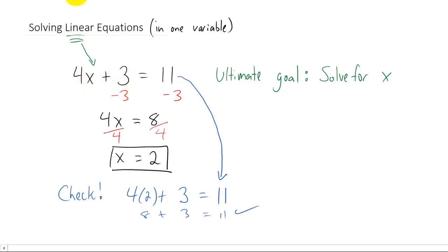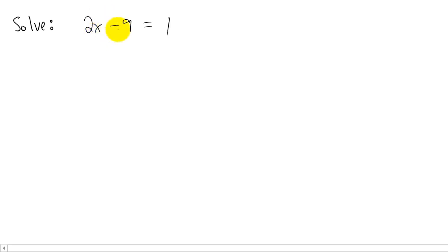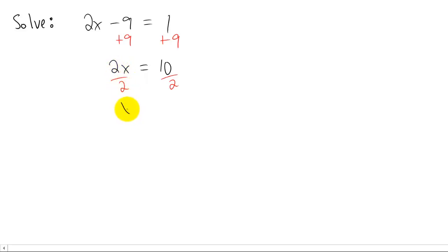Let's solve another one: 2x minus 9 equals 1. We can't do this in one step, but we can get the 2x term by itself. Since there's a 9 subtracted from 2x, we add 9 to both sides. That gives us 2x minus 9 plus 9, which is just 2x on the left, and 1 plus 9 equals 10 on the right. Then we divide both sides by 2: 2x divided by 2 is x, and 10 divided by 2 is 5. So x equals 5.